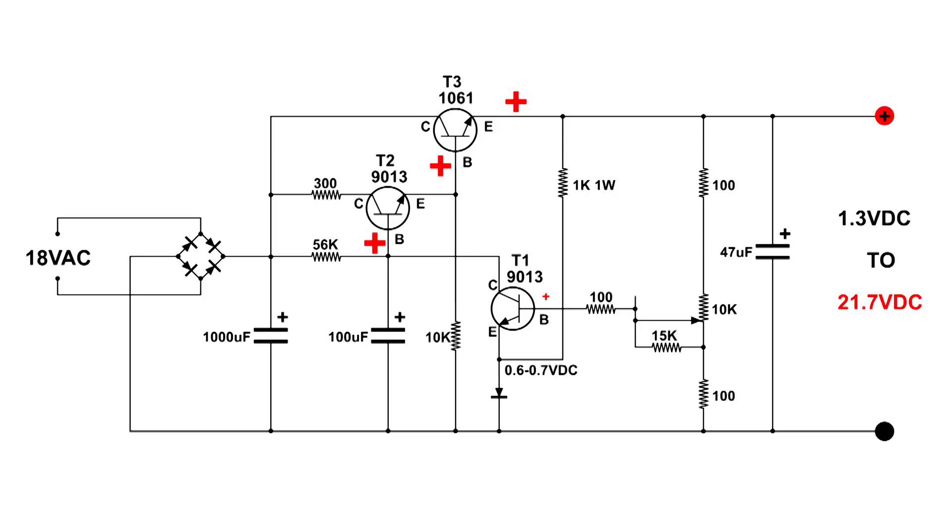So that positive voltage that goes through that 56K ohm resistor to base is very high, which turns on T2, which allows that positive voltage to go to the base of T3, turning it on all the way. And we end up with 21.7 volts DC at the output.